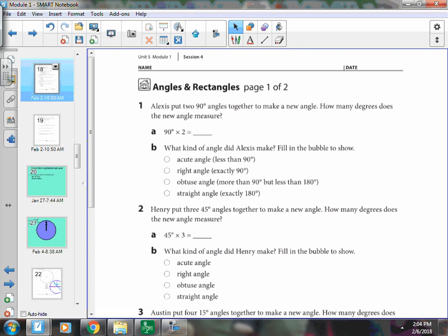Number one, Alexis put two 90-degree angles together to make a new angle. How many degrees does this new angle measure? 90 times 2 or 90 plus 90. I know that that is 180 degrees.